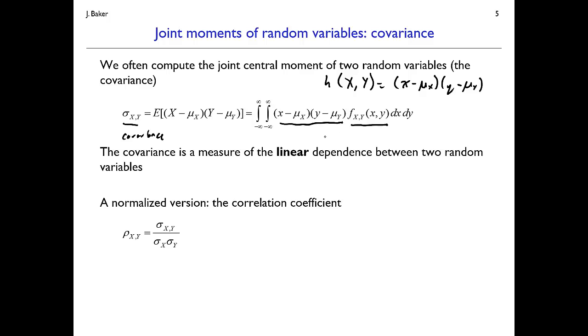A normalized version of the covariance is the correlation coefficient, denoted rho subscript xy. It equals the covariance divided by the standard deviation of x and the standard deviation of y, making it unitless since the covariance has units of x times y. The correlation coefficient takes values between negative 1 and positive 1: negative 1 indicates perfect negative linear dependence, positive 1 indicates perfect positive linear dependence, and 0 indicates no linear dependence. Note that a correlation of 0 does not mean x and y are independent — it only means there's no linear dependence between them. That's a quick look at expectations and moments, which are frequently used operations to study properties of random variables.